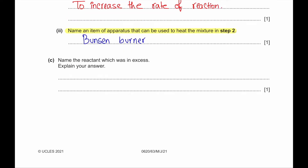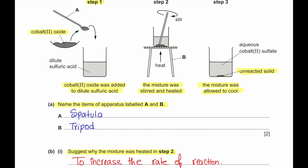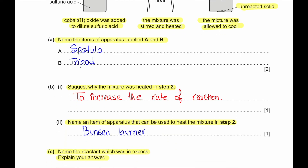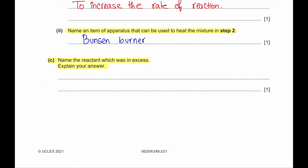Part C: Name the reactant which was in excess and explain your answer. We can see from the reaction that there is some unreacted solid left. So cobalt 2 oxide was in excess because there was solid left at the end.